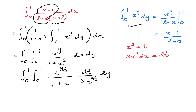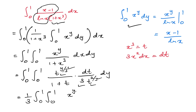We can simplify: the 1/3 comes outside, and the powers of t combine. Since the definite integral is independent of the variable name, we replace t with x, giving us (1/3) times the double integral from 0 to 1 of x to the power (y/3 minus 2/3) over (1 plus x) dx dy.